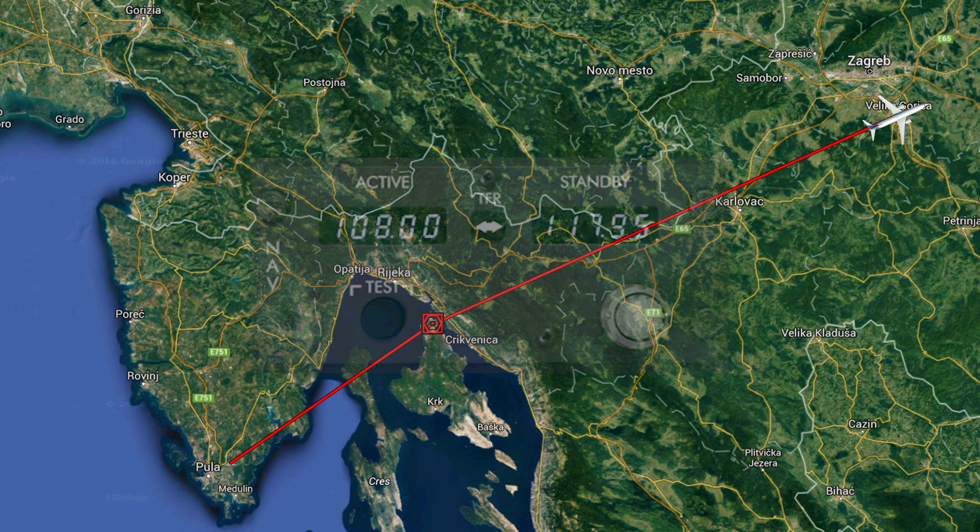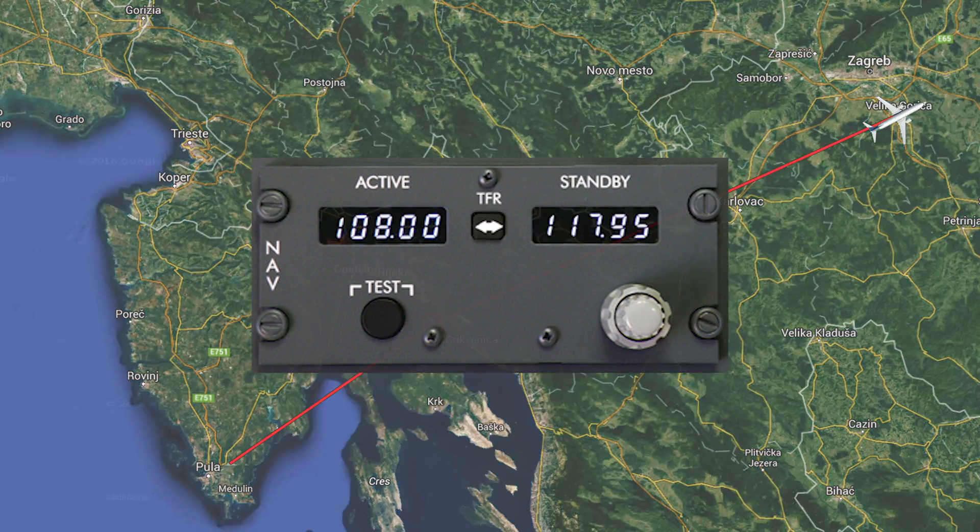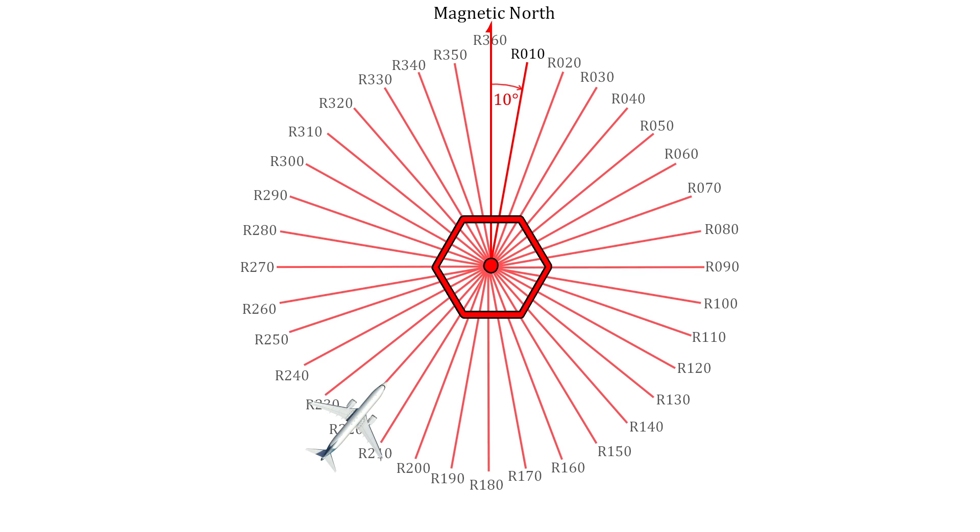The frequency band for VOR stations is from 108 to 117.95 MHz. To be able to navigate via VOR stations, one must be familiar with radials. A radial is basically a line of position that extends outwards from a VOR station with an angular displacement from the magnetic north. This results in a wide range of possible radials that the aircraft can fly along.